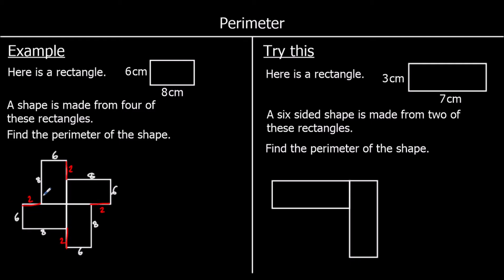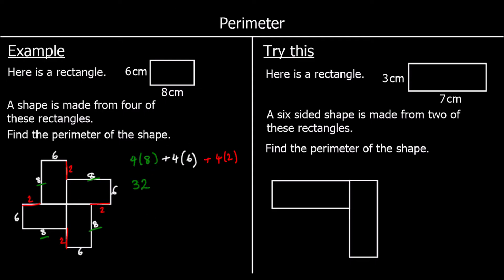Now we know every length all the way around the shape. All we have to do is add them all together. We've got four eights — so four times eight. We've got four sixes. And we've got four twos. So let's add them all together. Four eights are 32. Four sixes are 24. And four twos are eight. 32 and eight make 40, plus 24 is 64. So it's 64 centimeters — the distance all the way around the shape.